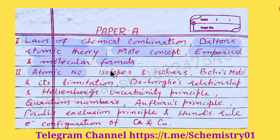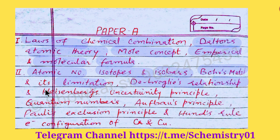The next chapter is Atomic Structure. Here you will study the atomic number, isotopes, isobars, isotones, and isodiaphers. Similarly, Bohr's model and its limitations — that's very important. Similarly, de Broglie's relationship and Heisenberg's uncertainty principle are very important, and numerical type questions are also asked from this. Then you will study the quantum numbers — all four types.